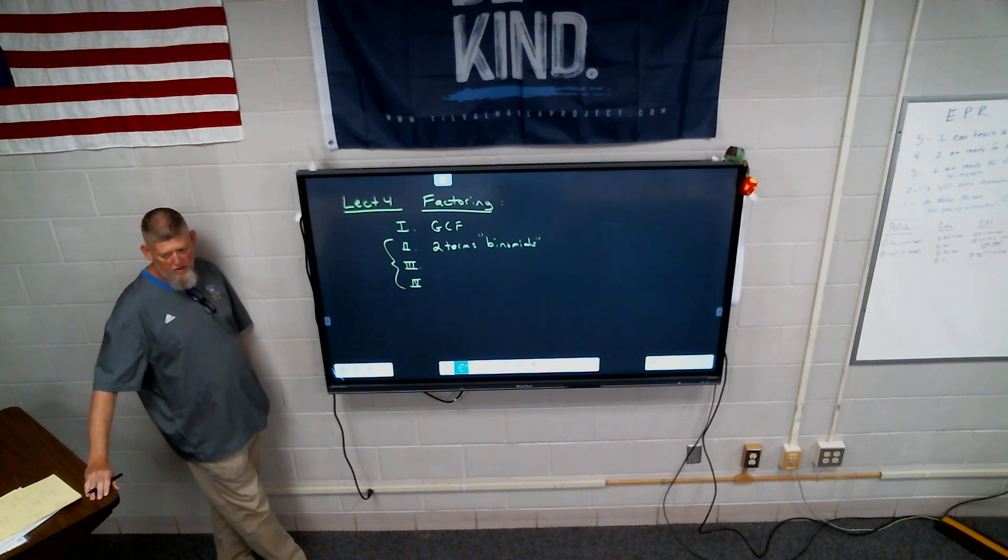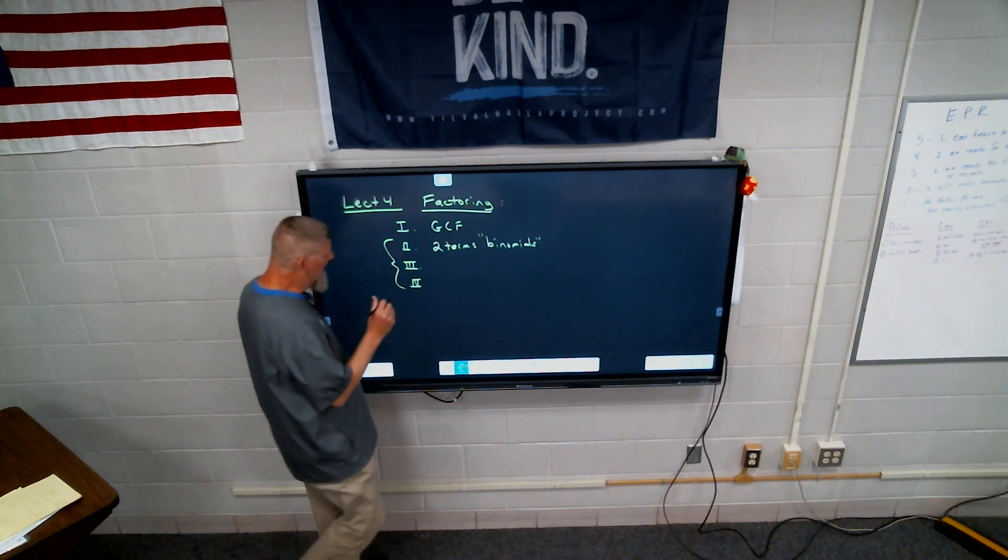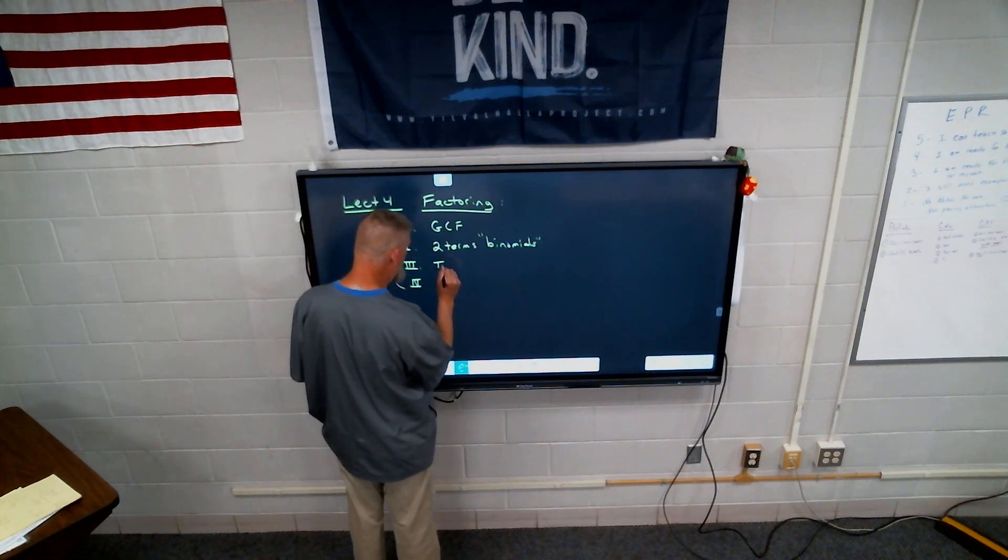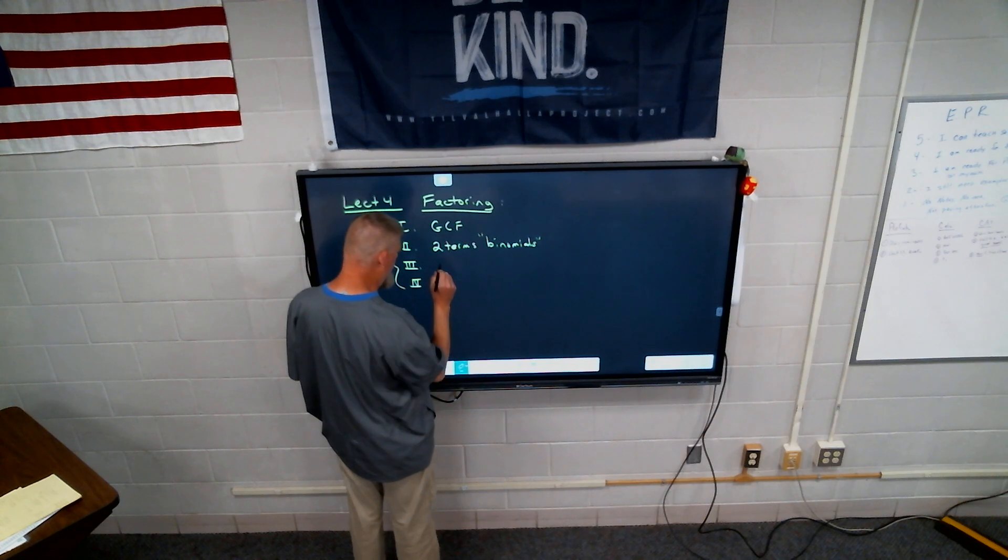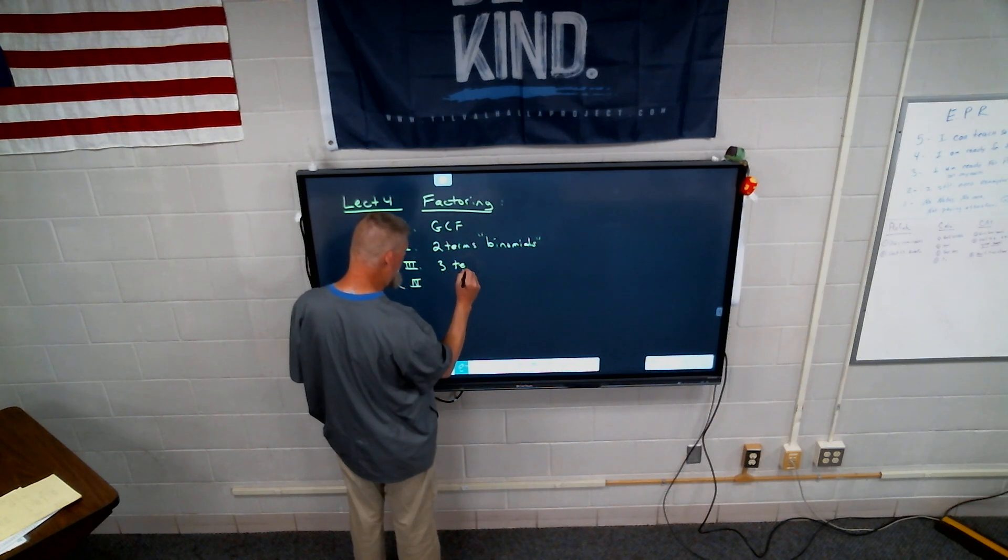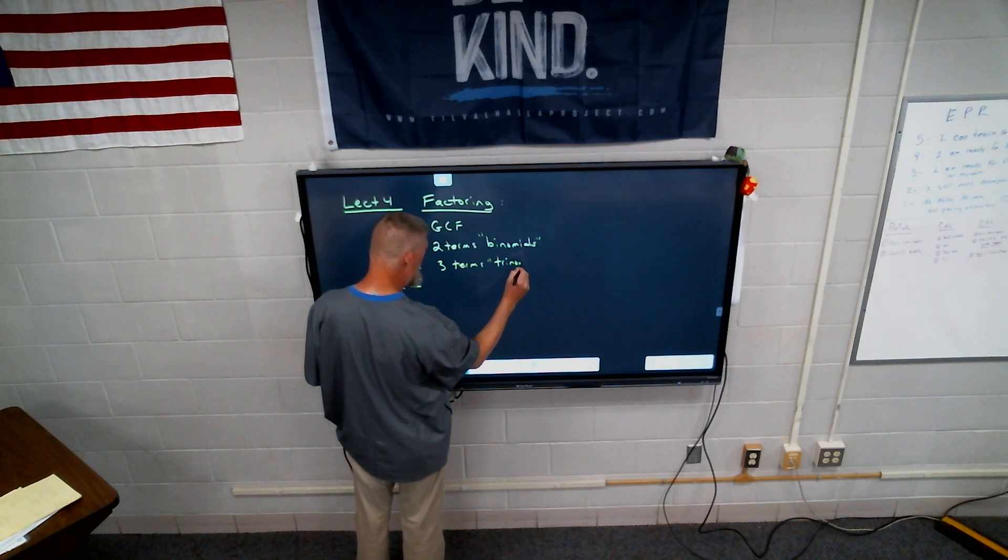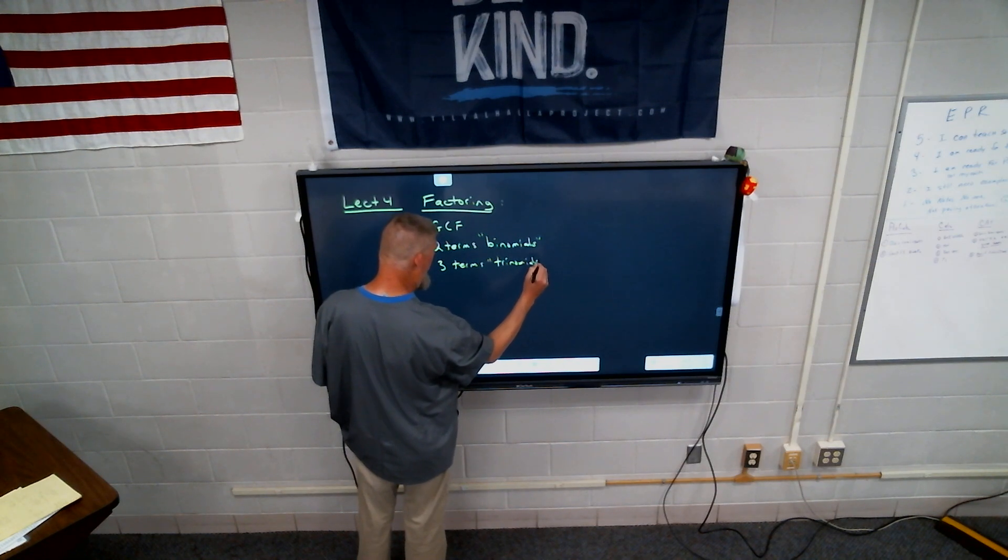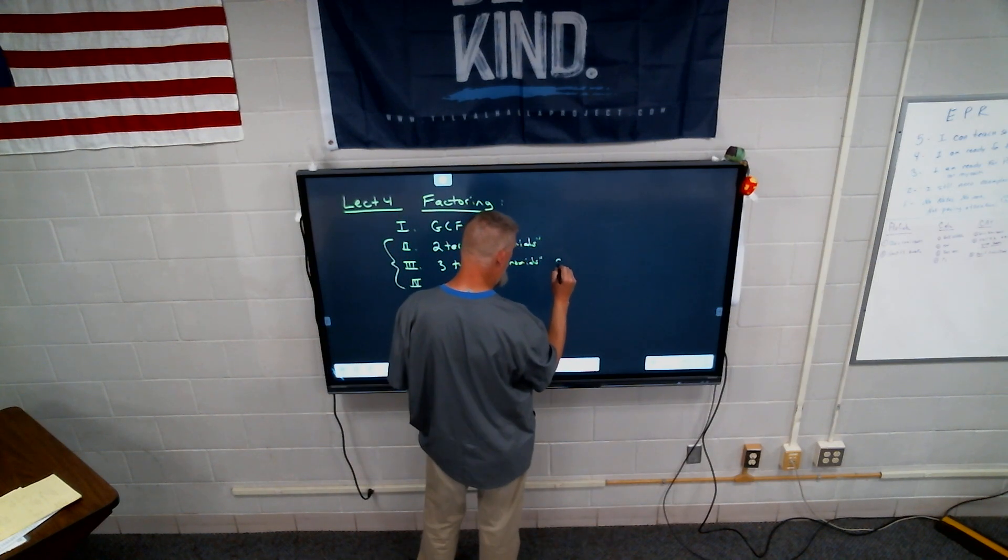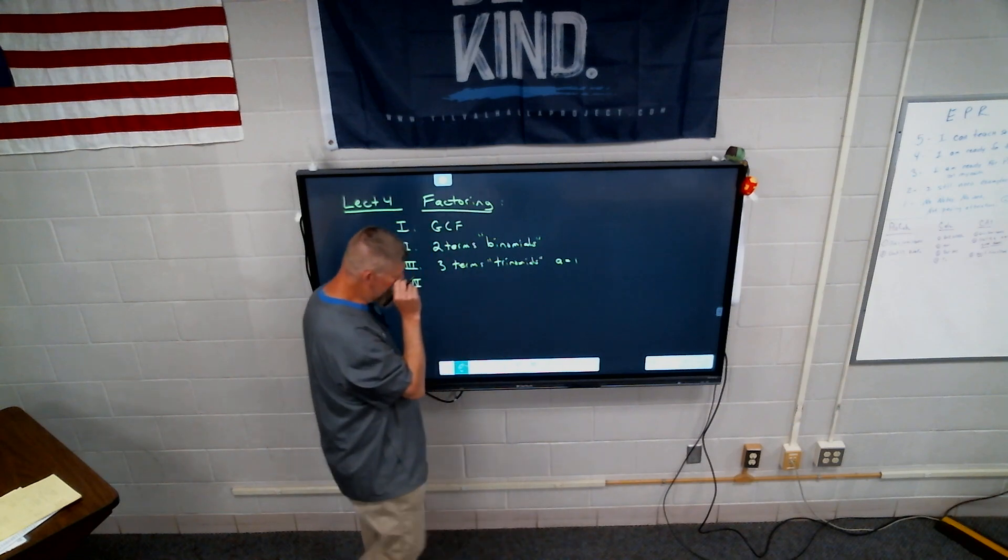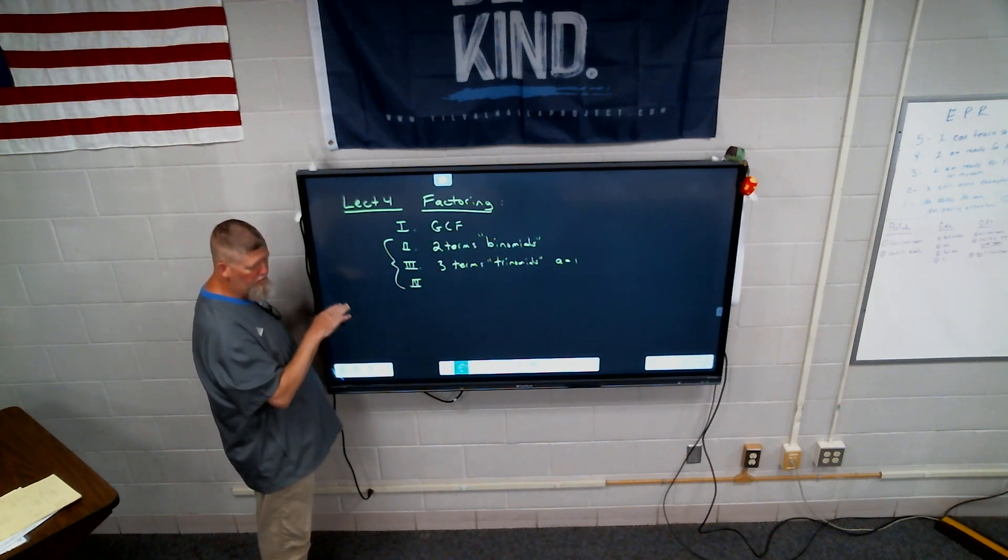Number three, what was that talking about? Trinomials. Now, underneath that one, there's two types. And actually, let's stay consistent here. Three terms. What we call trinomials. And the other day, we talked about when a equals one. So that's what we're going to pick up today in rule number three. And we're also going to do rule number four today as well.